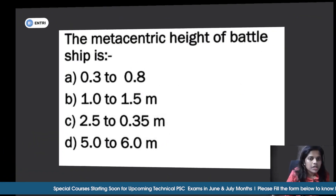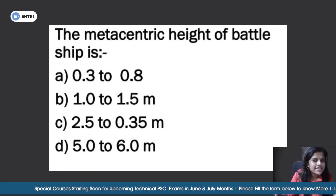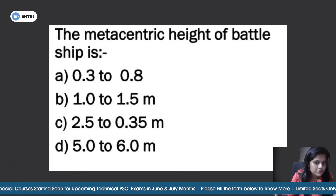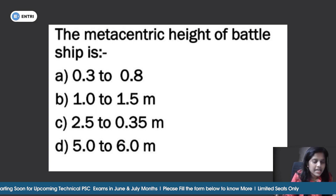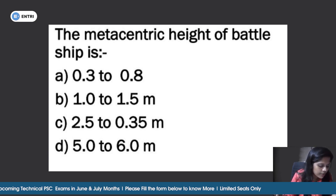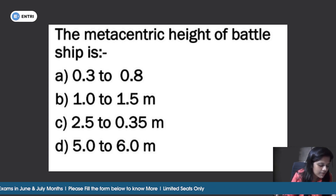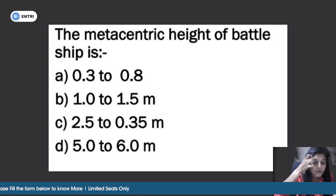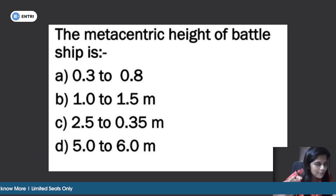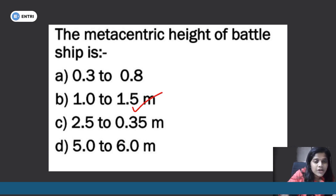Third question: the metacentric height of a battleship. Options are 1.3 to 0.8 m, 1 to 1.5 m, 2.5 to 0.3 m, or 5 to 6 m. The correct answer is that the metacentric height of a battleship is 1 to 1.5 meters.